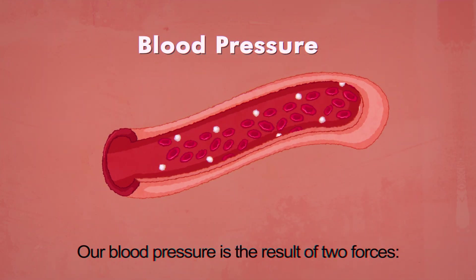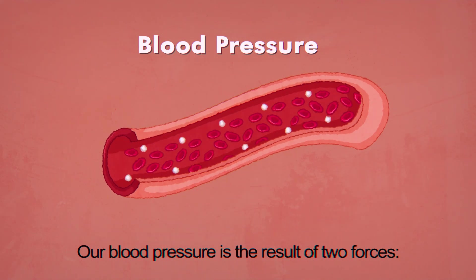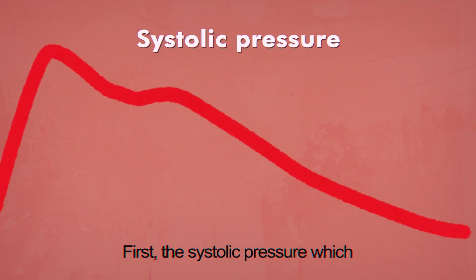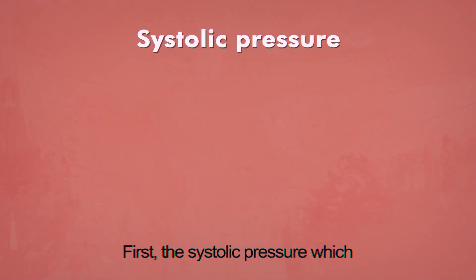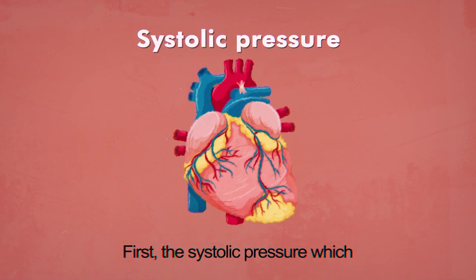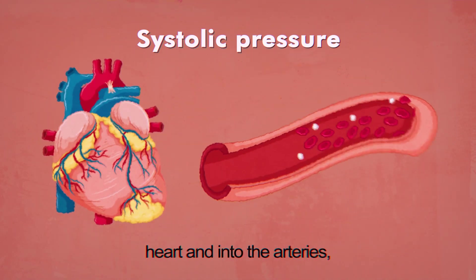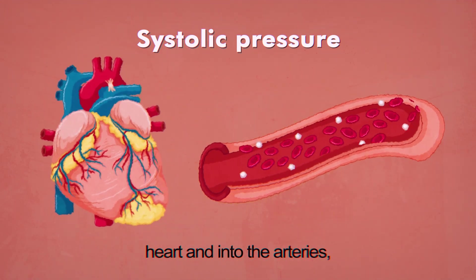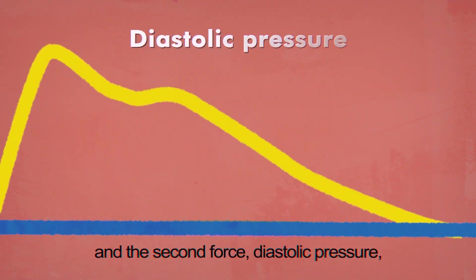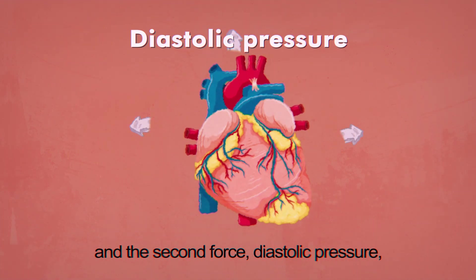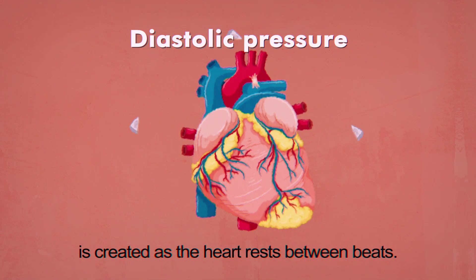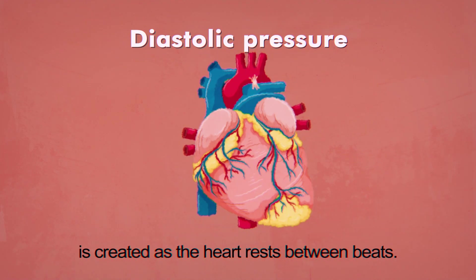Our blood pressure is a result of two forces. First, the systolic pressure, which occurs as blood pumps out of the heart and into the arteries. And the second force, the diastolic pressure, is created as the heart rests in between beats.